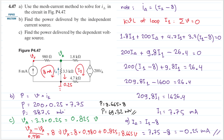So these are all the answers: for question a we have i_delta equals minus 0.25 milliampere, for question b we have 387.5 milliwatt, and for question c we have 69.32 milliwatt. That's all for this problem — see you in the next video, bye bye!